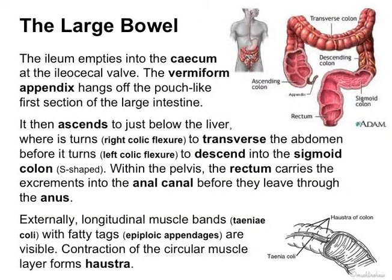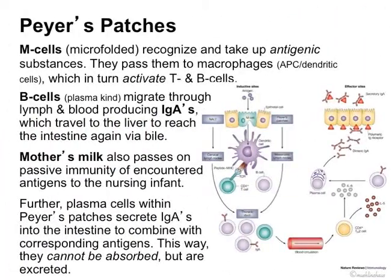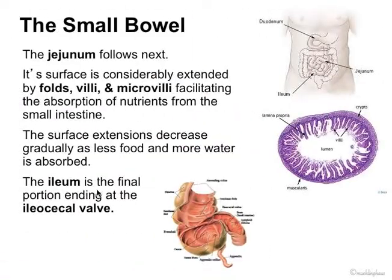That brings us to the large bowel. The ileum empties into the cecum at the ileocecal valve. The vermiform appendix hangs off like a small pouch — it's like the first section off of that large intestine. We've seen the ileocecal valve area on the other slide. Here's the ileum finishing up, here's the ileocecal valve area, that's the cecum, and then the appendix is coming up and hanging off on the end here.